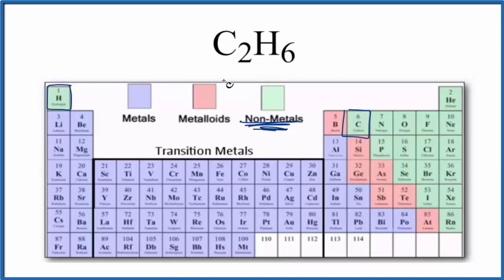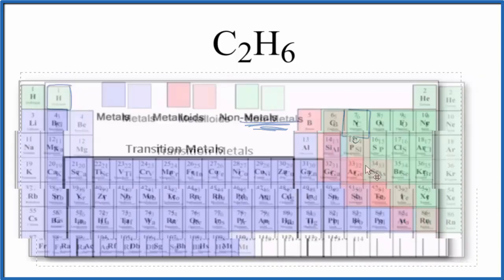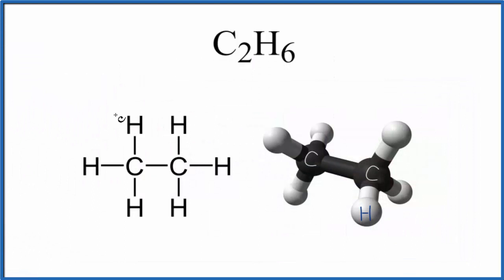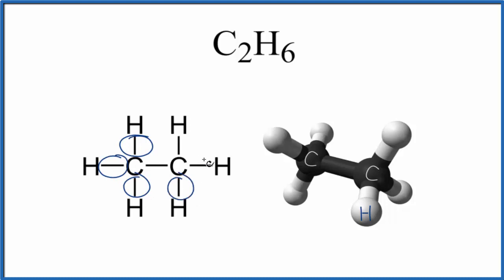Let's look at the structure for C2H6. Because there's not a big difference between the carbon and the hydrogen in terms of their electronegativities, they're going to share electrons, and we represent that shared pair of electrons by the single bond here. So each hydrogen is bonded to carbon with a single bond where it's sharing two electrons, a pair of electrons.